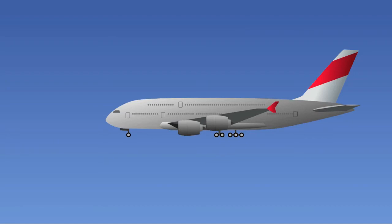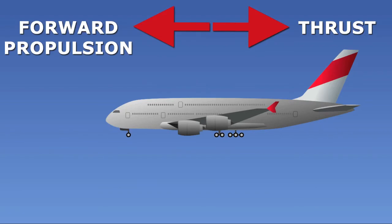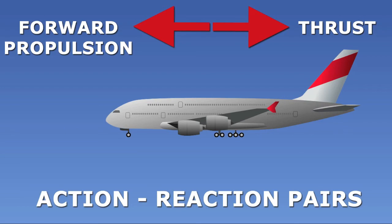But how about we apply it to an airplane? A jet airplane has jet engines that thrust backward. According to Newton's Third Law, this should produce a forward propulsion. These two forces, equal and opposite, form an action and reaction pair. And what's very interesting about moving objects is that they form many action and reaction pairs. For example, as the jetliner moves forward, it pushes on the air, but the air pushes backward, forming an action and reaction pair.